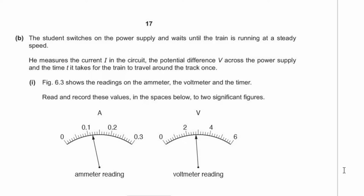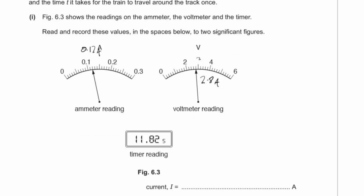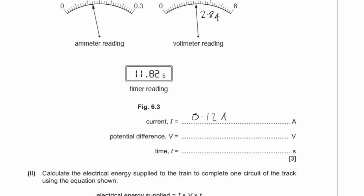B: the student measures current I, potential difference V, and time T for one circuit. Reading the meters to two significant figures: the ammeter reads 0.12 A, the voltmeter reads 2.8 V, and the timer reads 11.82 seconds.